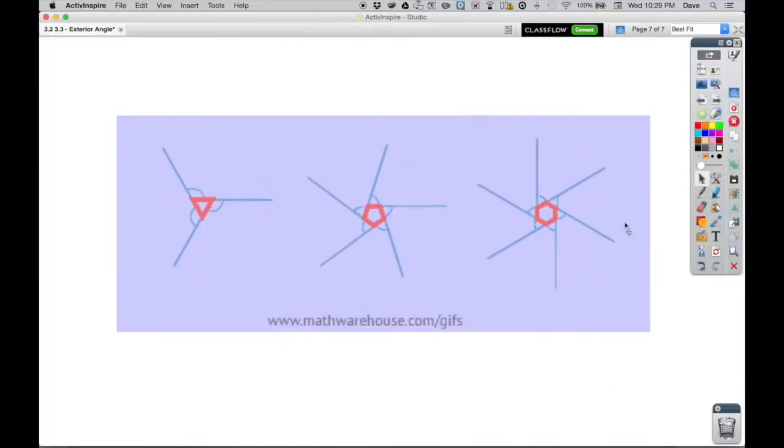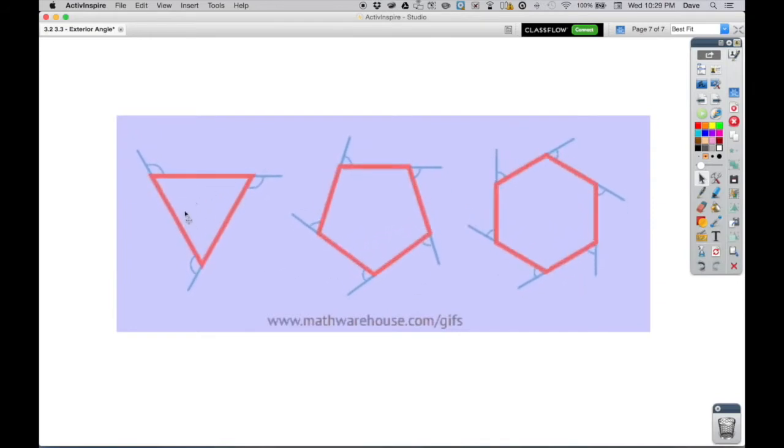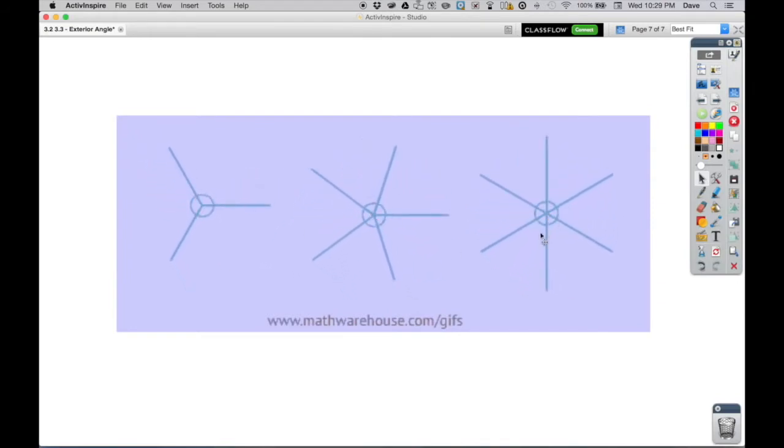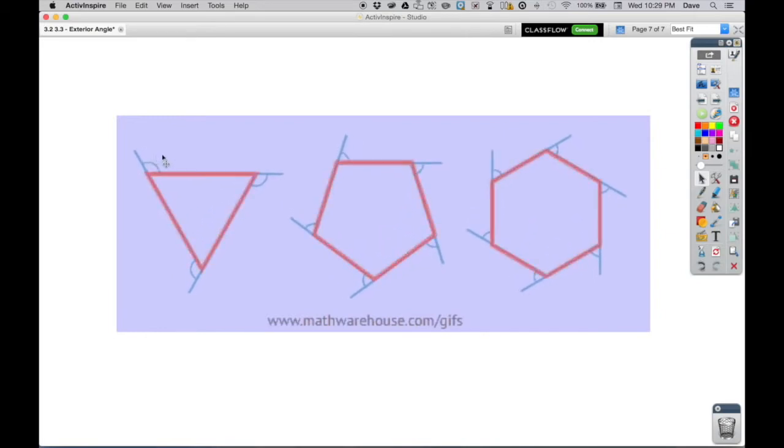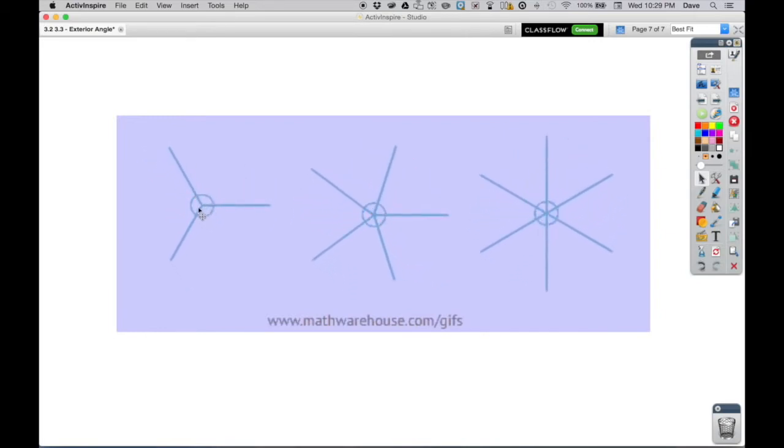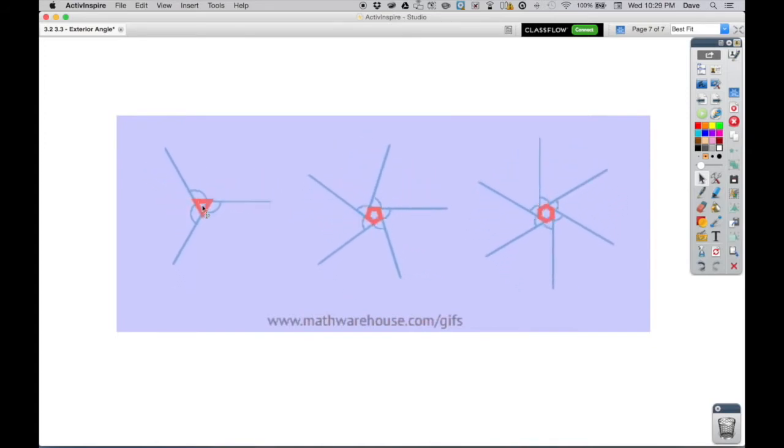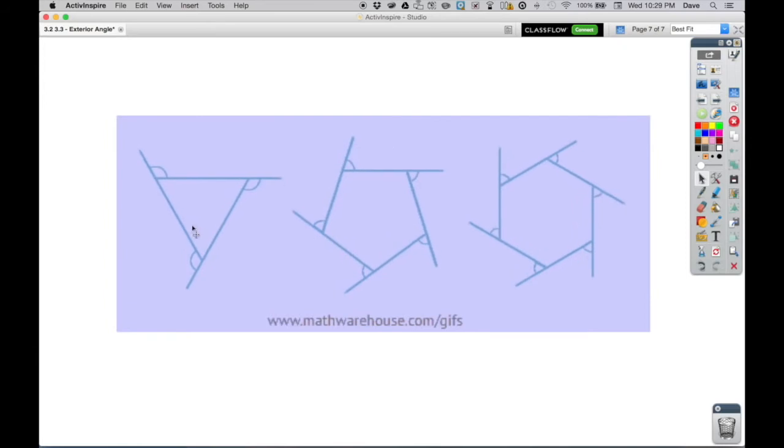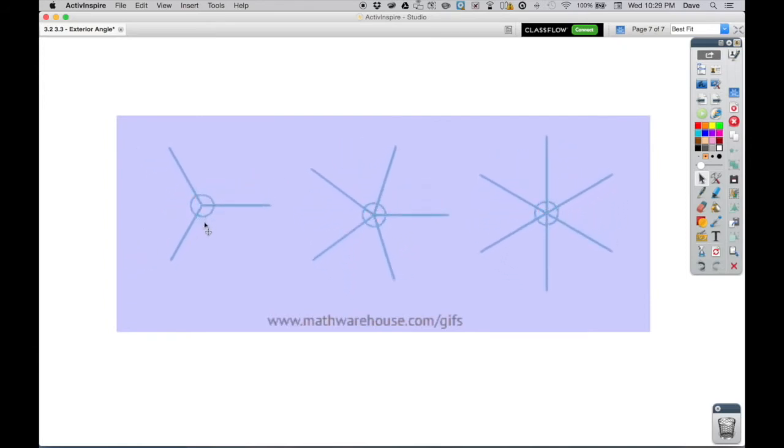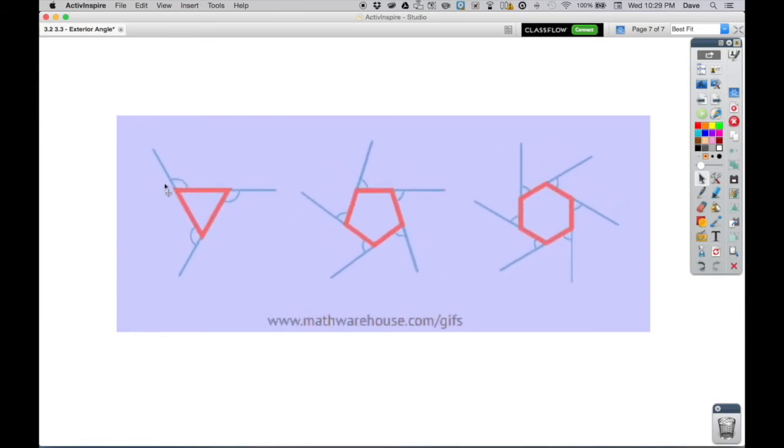Now, another way to think about it, and I've always loved this visual, is if you think about your shapes, here's a triangle, a pentagon, a hexagon, and look how the exterior angles are marked. If you make this triangle smaller and smaller and smaller until it's infinitesimally small and basically disappears, notice that the three angles add up to 360 degrees. So just like we saw in the last example, that no matter what the shape is, the exterior angles always add up to 360.